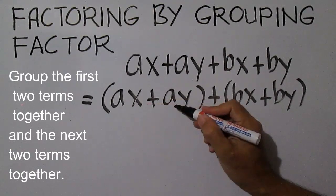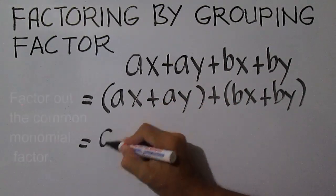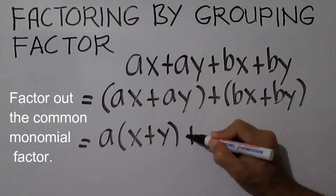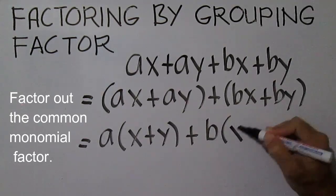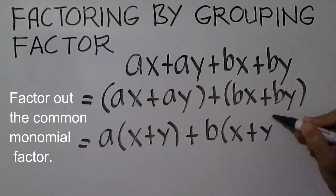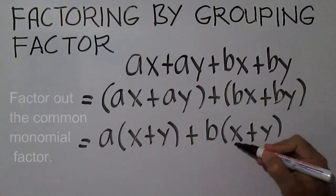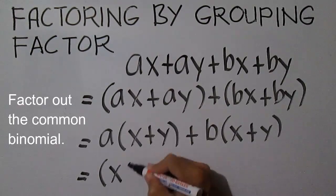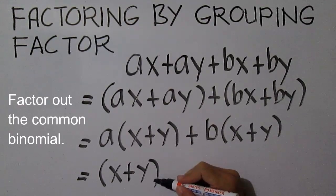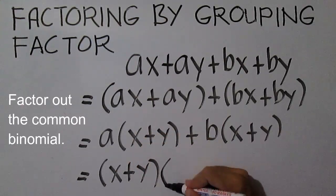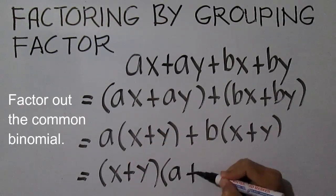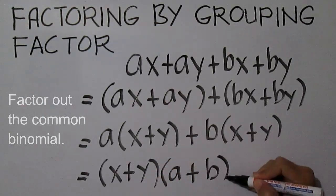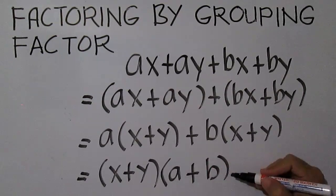Next, factor out the common monomial. A, and the other factor is X plus Y. Here is B, and the other factor is X plus Y. Note that we have a common binomial — factor out X plus Y. Divide each term by the common binomial. The other factor is A plus B. The factors are X plus Y and A plus B.